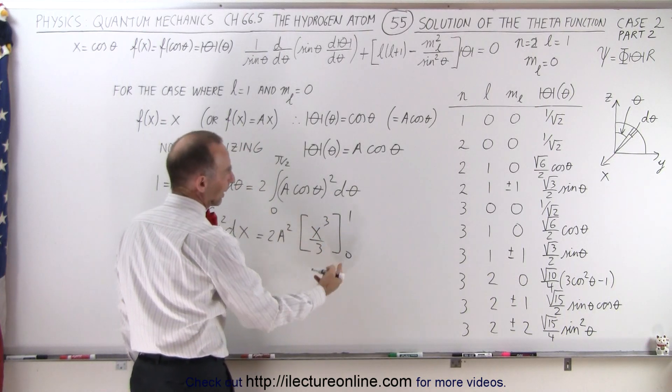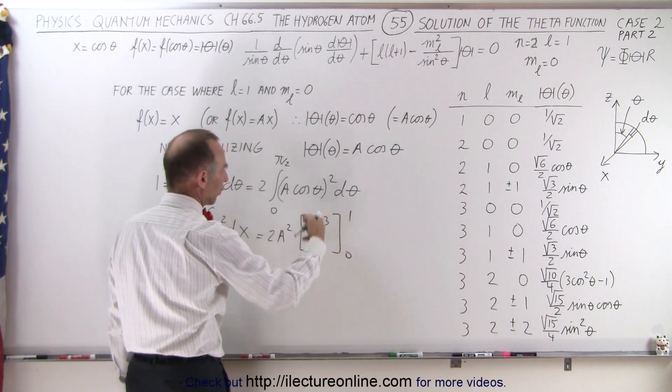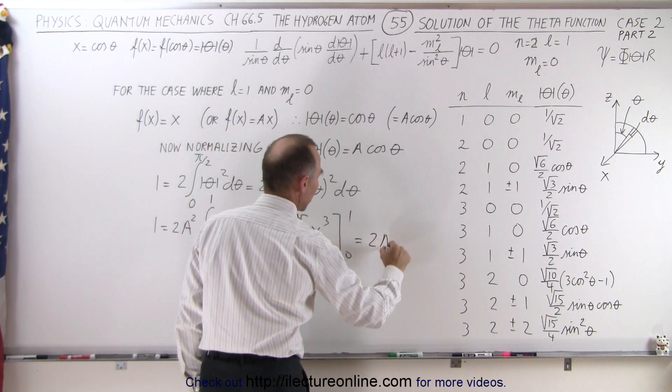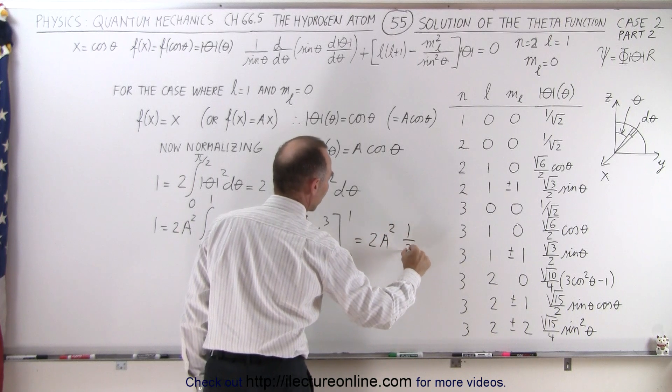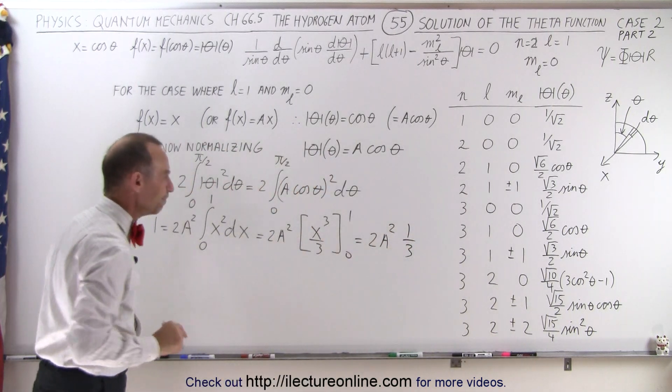Plug in the lower limit, you get nothing. Plug in the upper limit, you get one-third. So this becomes two a squared times one-third, and that should equal one.